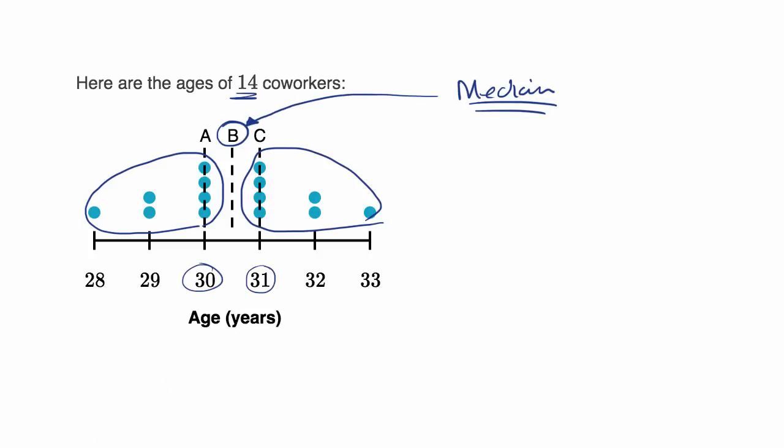Now, what about the mean? Well, this is a perfectly symmetric distribution. If I wanted to balance it, I would put the fulcrum right in the middle. So I would say that the mean would also be at B. And we are done.